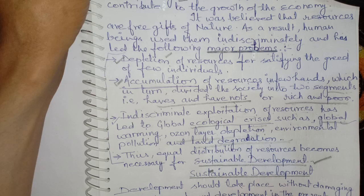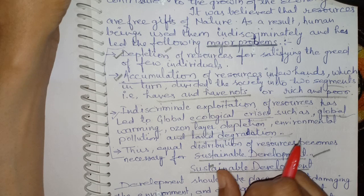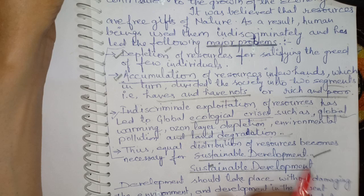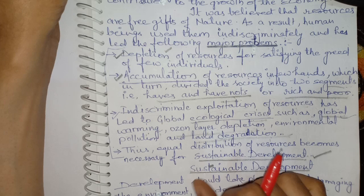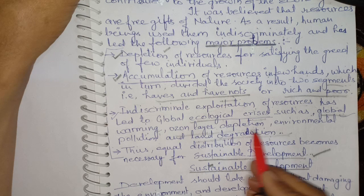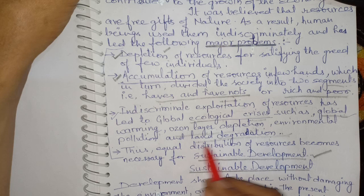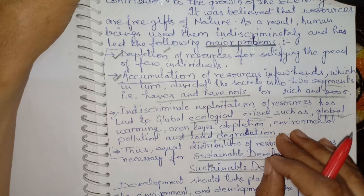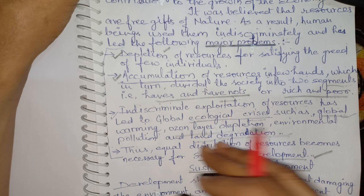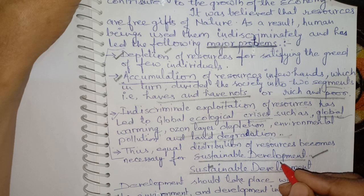Global warming is caused by excess carbon dioxide in the atmosphere, leading to melting of polar ice, rising sea levels, and threatening all life on Earth. Ozone layer depletion means the protective layer that shields us from harmful ultraviolet rays is developing holes due to pollution. Land degradation occurs when mining pits are dug and left behind — the fertile topsoil is destroyed and cannot be rebuilt easily, and the lower soil lacks nitrogen. All of this is the result of indiscriminate use and misuse of resources.